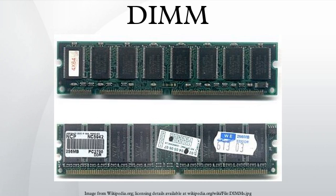Additional common DIMM types include: 204-pin SO-DIMM for DDR3-SDRAM; 214-pin micro-DIMM for DDR2-SDRAM; 240-pin DIMM for DDR2-SDRAM, DDR3-SDRAM, and FB-DIMM; 244-pin mini-DIMM for DDR2-SDRAM; 260-pin SO-DIMM for DDR4-SDRAM; 288-pin DIMM for DDR4-SDRAM; and 168-pin SDRAM.